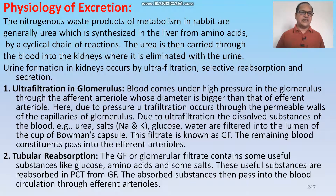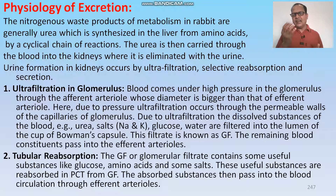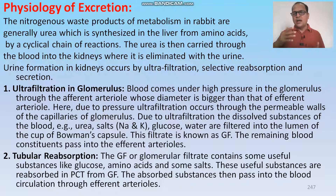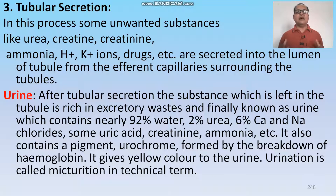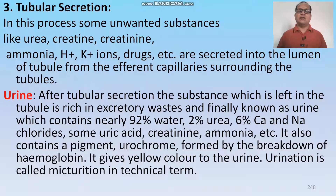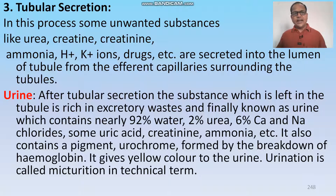Urine formation is performed in three steps. First, ultrafiltration: by great pressure, the glomerular filtrate is separated out from the blood. Second, tubular reabsorption: important substances like glucose, amino acids and some salts are filtered into the glomerular filtrate and then reabsorbed from it back into the blood. Third, tubular secretion: some unwanted substances like urea, creatinine, ammonia, hydrogen ions, potassium ions and drugs are secreted into the lumen of the tubule from the efferent peritubular capillaries surrounding the tubule. Urine is composed of approximately 92% water, 2% urea, 6% calcium and sodium chloride, some uric acid and creatinine. The process of urination is called micturition.